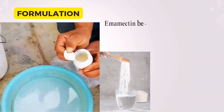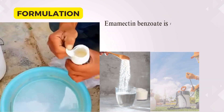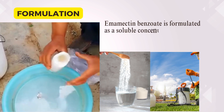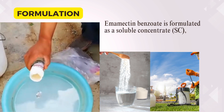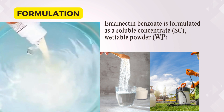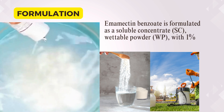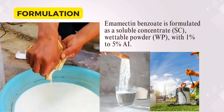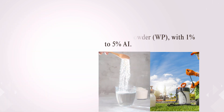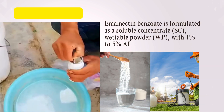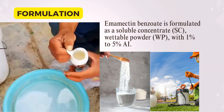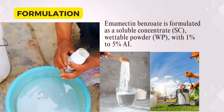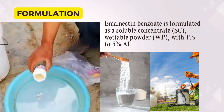Emamectin benzoate is formulated as a soluble concentrate (SC), wettable powder (WP), or granular formulation for ease of application. The concentration of emamectin benzoate in these formulations typically ranges from 1% to 5%, depending on the target pest and application method.